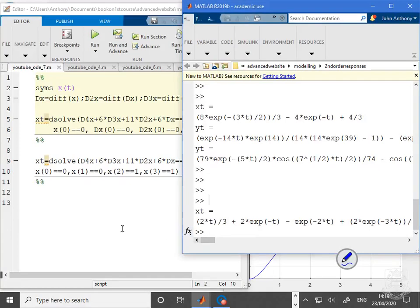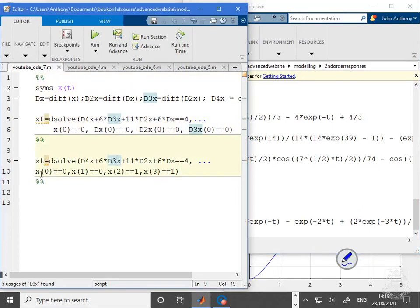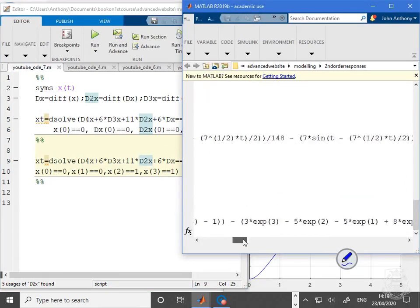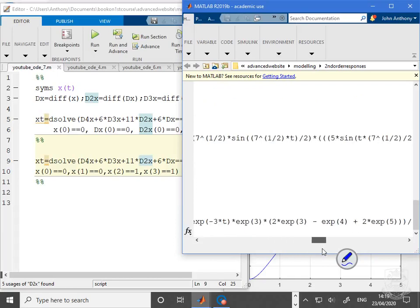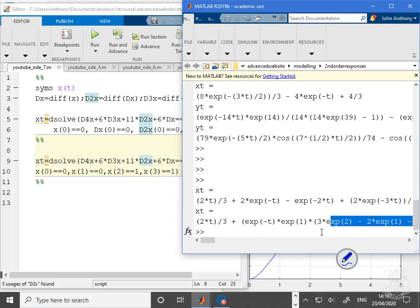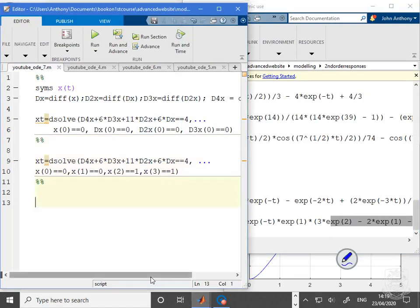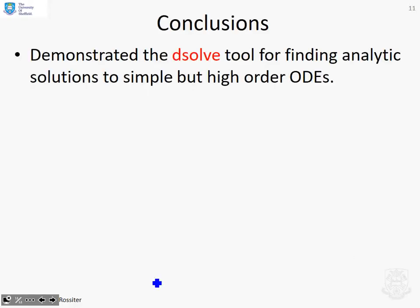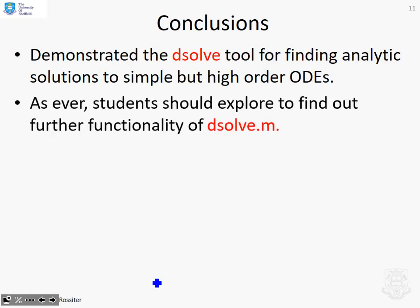And then the final section down here was just to illustrate your initial conditions can be any four independent conditions because this is fourth order. So I run this section, and you will see you get a slightly different answer because you've expressed your initial conditions in a different way. Again, you can see that's quite a long answer, but there's lots of numbers in here which, for example here, numbers which you could simplify and calculate. Okay, so in summary, we've demonstrated the dsolve tool for finding analytic solutions to simple but higher-order ODEs. And as ever, we'd encourage you to find out more if you need it by using help dsolve.